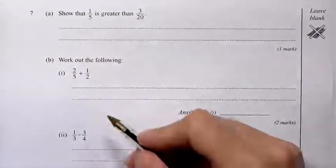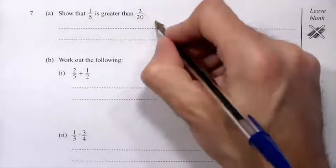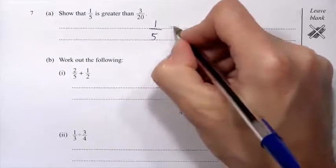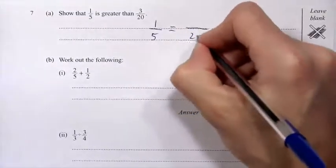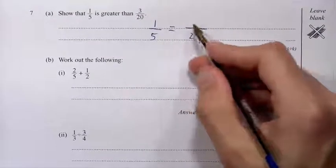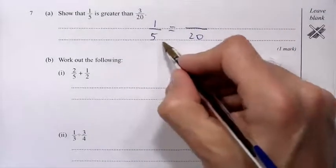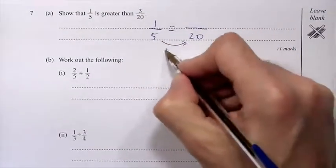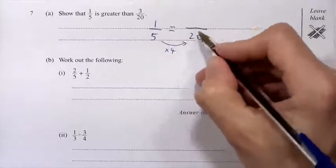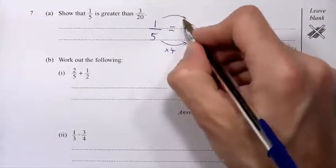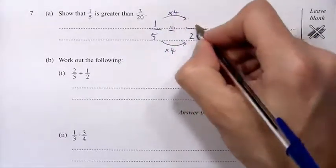So I'm going to convert this 1 fifth into a certain number of 20ths. So 1 fifth equals a certain number of 20ths. So what goes on the top? Well, on the bottom we've times by 4. And to keep these fractions equivalent, that's what we need to do to the top as well. And 1 times 4 is 4.